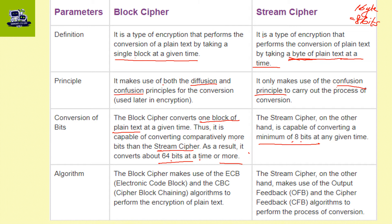Block cipher makes use of ECB (Electronic Code Book) and CBC (Cipher Block Chaining) modes. Stream cipher uses Output Feedback (OFB) and Cipher Feedback (CFB) modes.